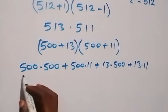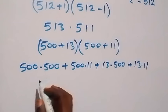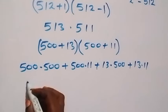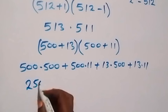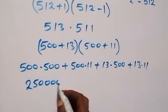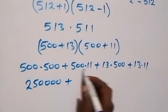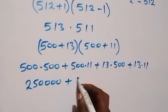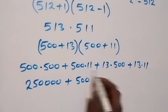Then, next we multiply this and 500 times 500 gives us 250,000. Then, plus here we have 500 times 11.